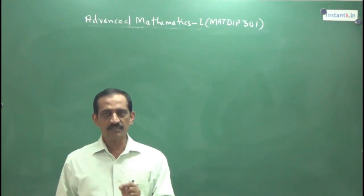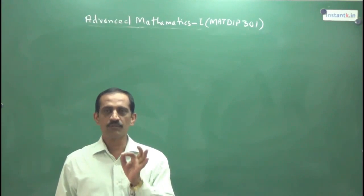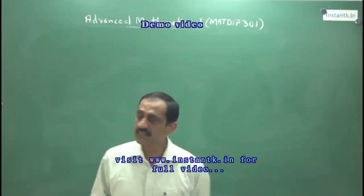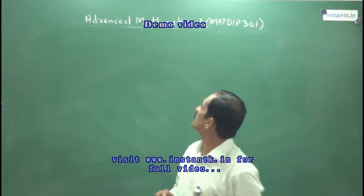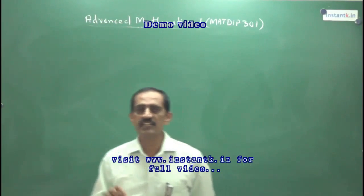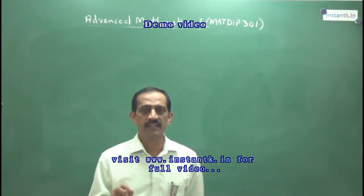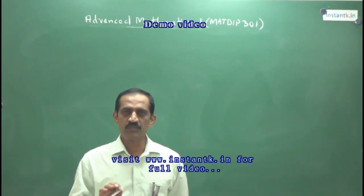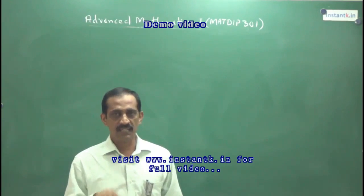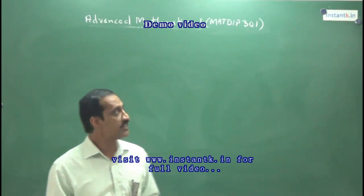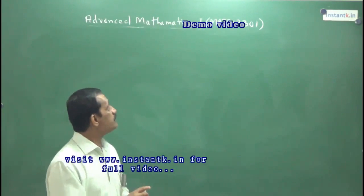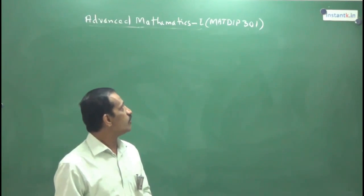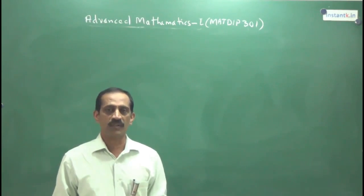So in third semester, you have to complete one subject. The title is Advanced Mathematics 1, that is MAT DIP 301. In the next semester, fourth semester, you have to complete Advanced Mathematics 2. That subject code is MAT DIP 401.